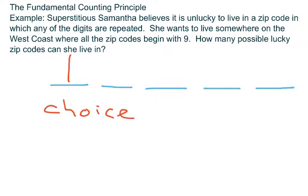Now if I look at the second digit, the second digit no longer has to be nine, but we have to think about the fact that she does not want to have any repeated digits. What that means for that second digit is it cannot be nine. So what digits could it be?